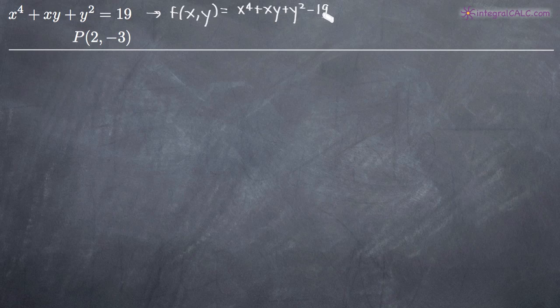So we've got this function f of xy and we need to find the equation of the tangent plane at the point p which is given to us as 2, negative 3. In order to do that, the first thing that we're going to do is find the gradient vector of this function f of xy.